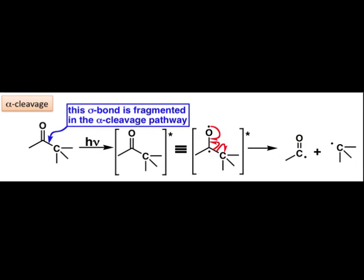We'll classify these fragmentations according to which bond relative to the position of the chromophore undergoes cleavage. For example, in the case of α cleavage, we'll be talking about a bond adjacent to the chromophore.